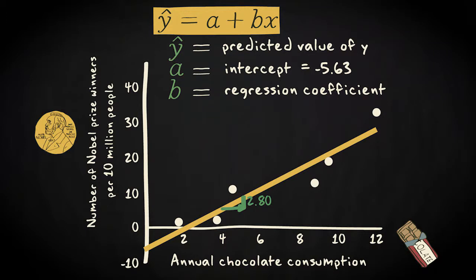Because we have a straight line, the slope of the regression line is the same everywhere. So also if we look at what happens when x increases from 8 to 9, y hat increases with 2.80 units. The regression coefficient in our example is 2.80.